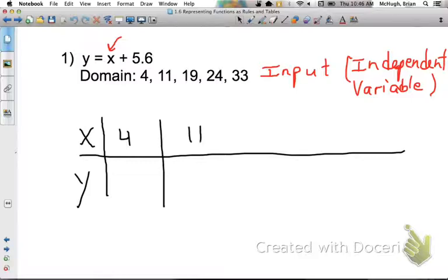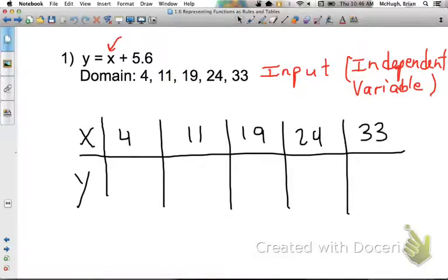Our input values 4, 11, 19, 24, and 33. We're going to take each one of those, and we're going to put them into our function rule here for x as input, and then we'll see what we get out for y as our output.